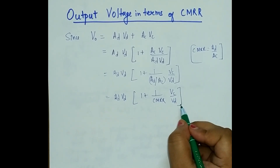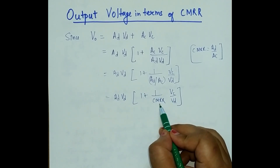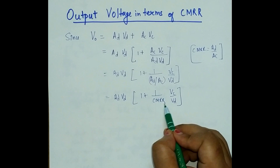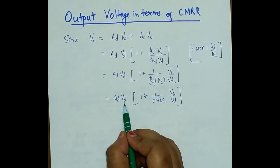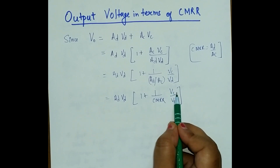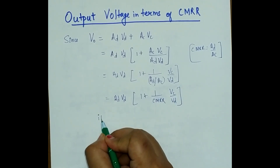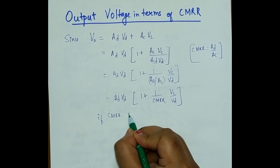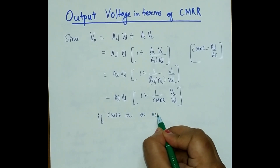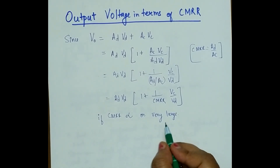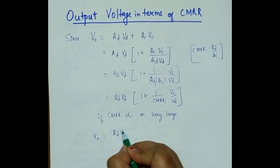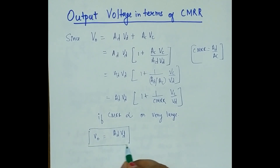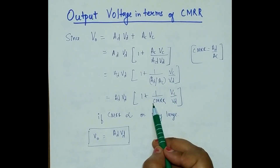Now if we put the value of CMRR as infinite, then 1 divided by infinite equals 0, so the whole term becomes 0. What will be left? Only AD and VD will remain, and VC will be eliminated. So if CMRR is infinite or very large, the whole common mode term becomes 0, and V0 will be AD·VD only. In this way we can reject the common mode by using the CMRR equation — that is why it is called the common mode rejection ratio.